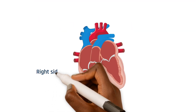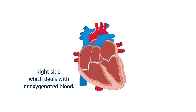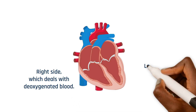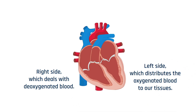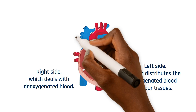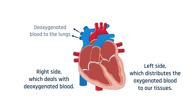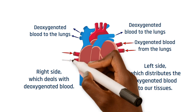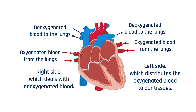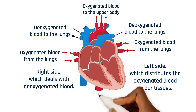The heart comprises the right side, which deals with the deoxygenated blood, and the left, which distributes the oxygenated blood to our tissues. The right side of the heart pumps blood to the lungs so that they can pick up oxygen, and then returns that oxygenated blood to the left side of the heart, where it's then distributed to the rest of your body.